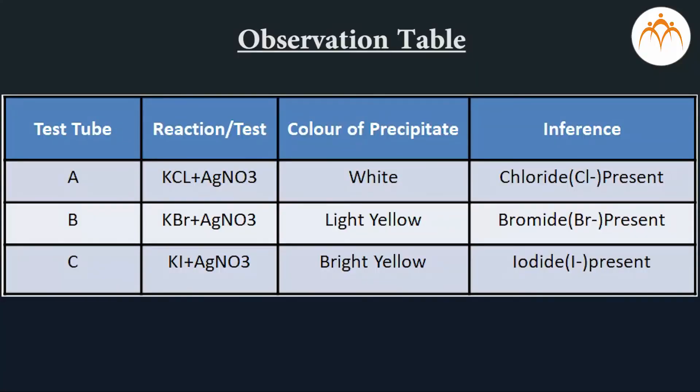This is the observation table. We conclude the following. We have identified that all three solutions contain halide or compound formed by halogens which is the 17th group. There is precipitation.